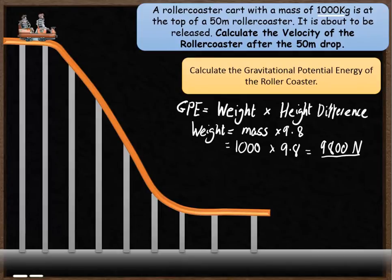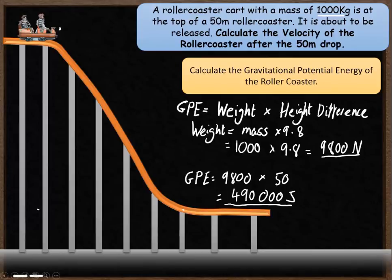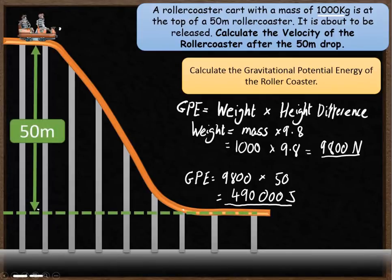We can then work out how much gravitational potential energy that roller coaster has. We take the weight of 9,800 and multiply that by the height difference which is 50, and that gives us a total gravitational potential energy of 490,000 joules. That's how much gravitational potential energy it has at the top, and it's going to drop down that 50 meters.